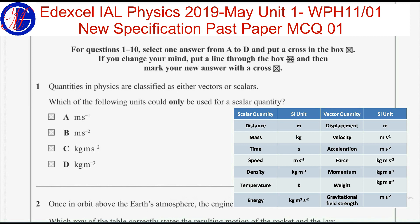Therefore, the correct answer is D, kilogram per meter cubed, which is the unit of density and which is a scalar quantity.